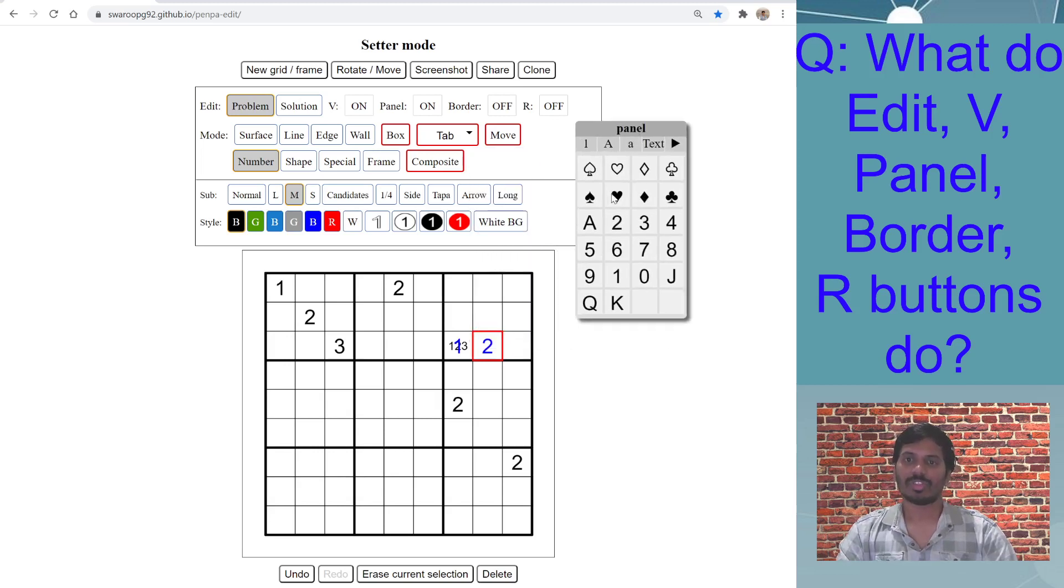So you can select these and it will enter those shapes into this grid depending on which mode you are in. You can enter large, small—you can explore this, but this is not the focus of today's episode.